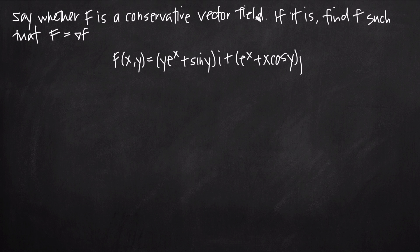There are two parts to this problem: first, to determine whether or not F is a conservative vector field, and second, to find the function f. The easiest way is to look at the scalar curl of F. If we can show that the scalar curl of F is equal to zero, and that F is defined everywhere in its domain, then that proves that F is a conservative vector field.